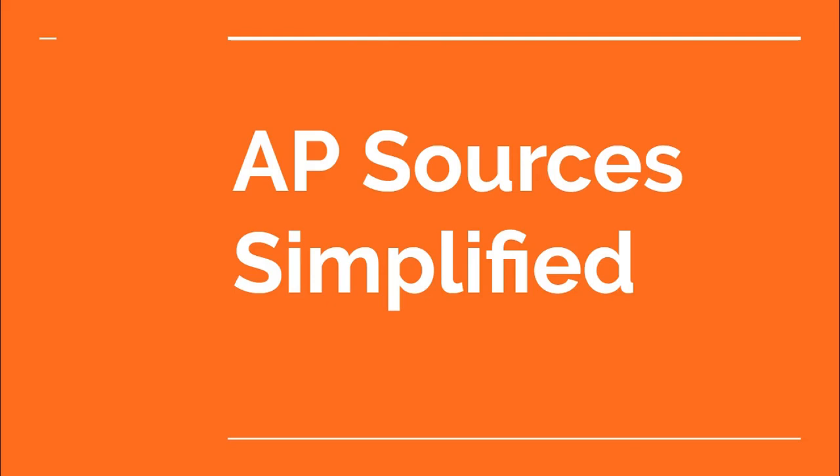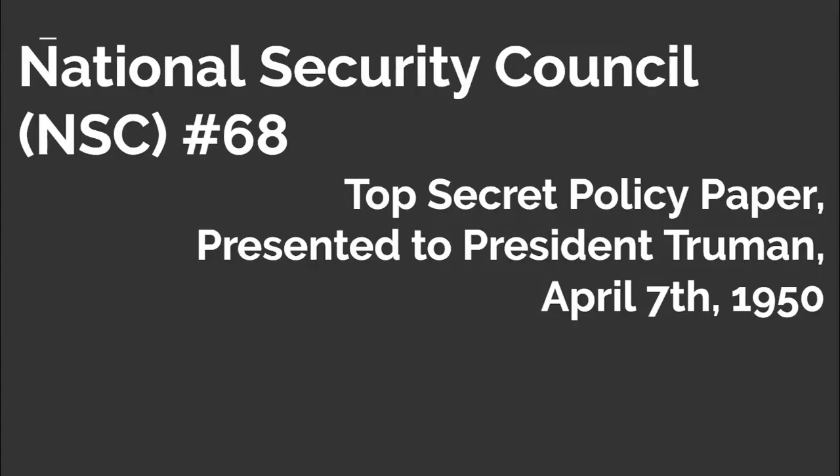Hello, welcome to AP Sources Simplified. Today we are looking at the National Security Council document 68. This important document would outline U.S. foreign policy during the Cold War with the Soviet Union. It was formulated by both the State Department and Department of Defense and presented to President Truman in April 1950.